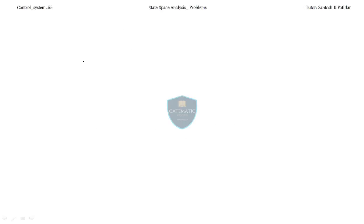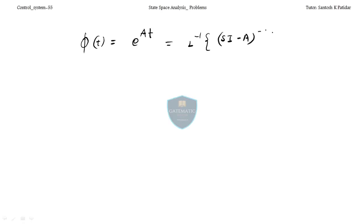So I am taking φ(t) — phi t is nothing but e^(At). In the s-domain, if you want to write it with L⁻¹, it will be (sI - A)⁻¹. This is nothing but the state transition matrix.